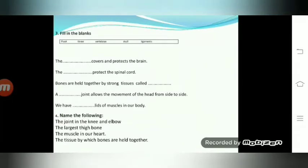Fill in the blanks — a helping box is also given to you; you can find the answers from it. First: the dash covers and protects the brain. The dash protects the spinal cord. Bones are held together by strong tissues called dash. A dash-dash joint allows the movement of the head from side to side. We have dash pairs of muscles in our body.